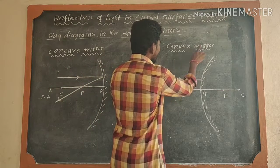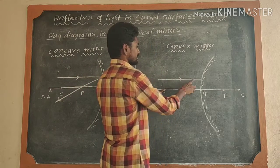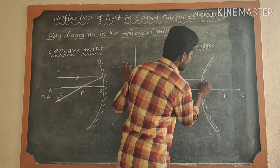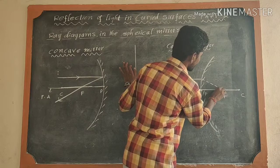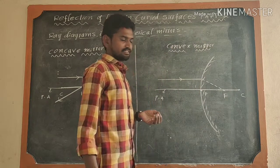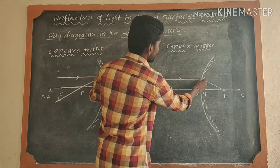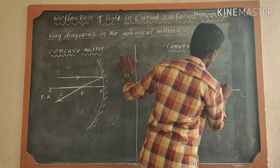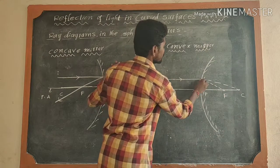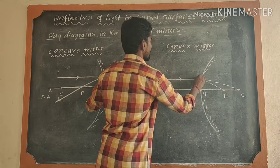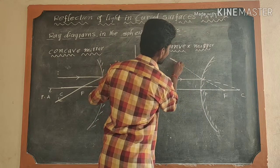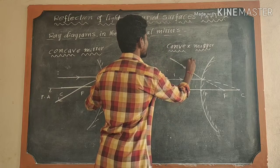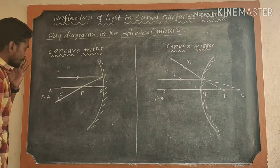In the convex mirror, the light ray is parallel to the principal axis and strikes the reflecting surface. The extended reflected ray reaches the focus. The normal reaches the center of curvature. This is the extended reflected ray. This is the actual direction of the reflected ray. This is the incident ray I1 and reflected ray R1.